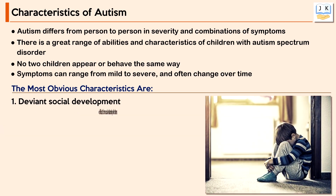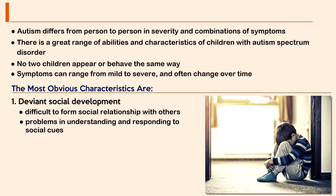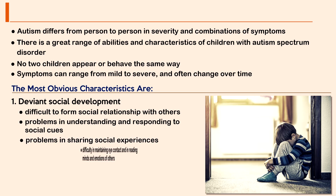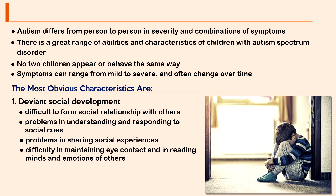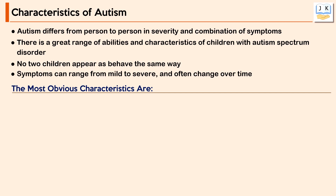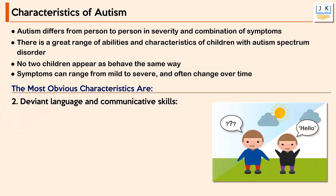One of the most obvious characteristics is deviant social development. Children with autism find it difficult to form social relationships with others. They have problems understanding and responding to social cues and social experiences, difficulty maintaining eye contact, and difficulty reading the minds and emotions of others. A distorted pattern of attachment is also noticed among them.